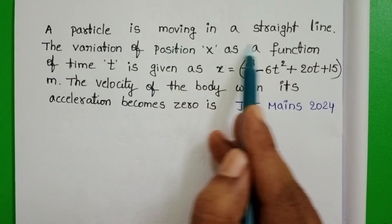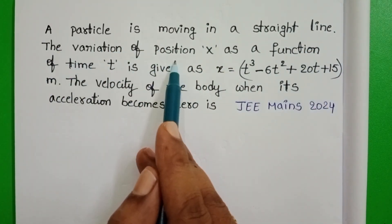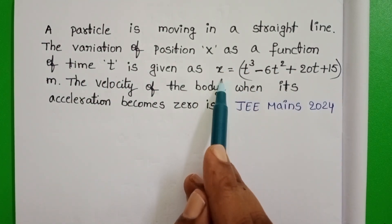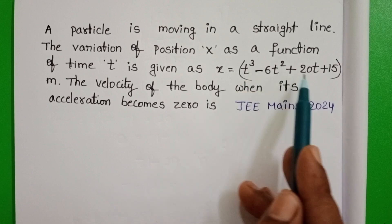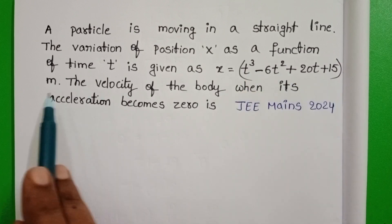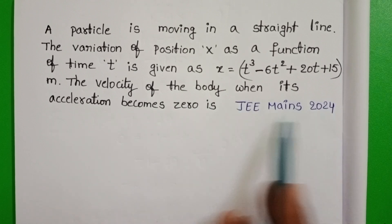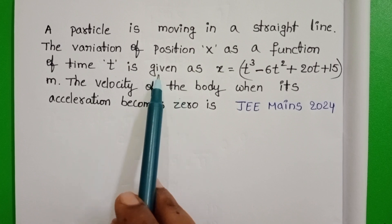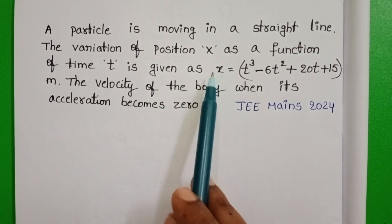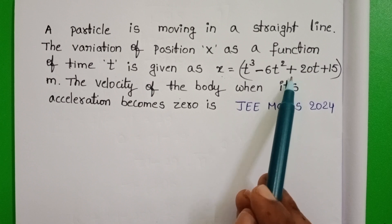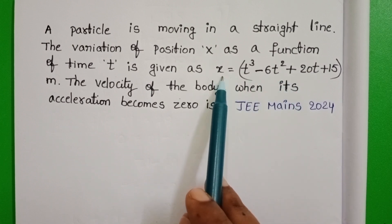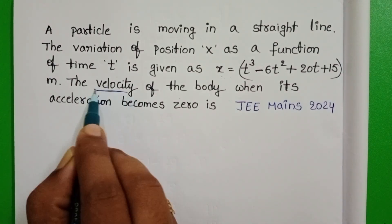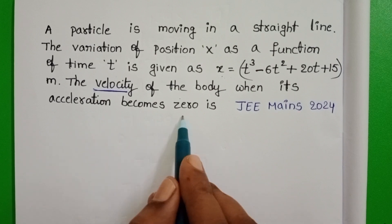A particle is moving in a straight line. The variation of position x as a function of time t is given by the equation x equals t cubed minus 6t squared plus 20t plus 15 meters. We need to find the velocity of the body when its acceleration becomes zero. We know the displacement is a function of time, and when time changes, the position of the body also changes.